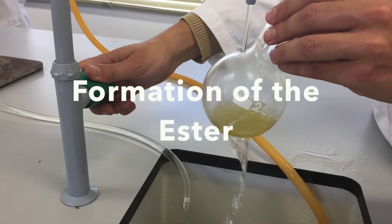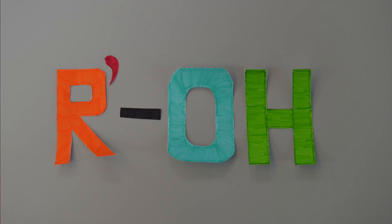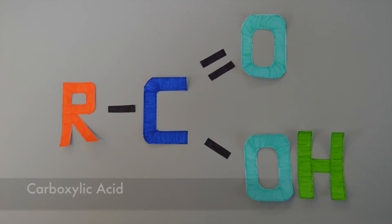Firstly, however, we are going to explain how the ester is formed. The ester is formed through a reaction between alcohol and carboxylic acid.